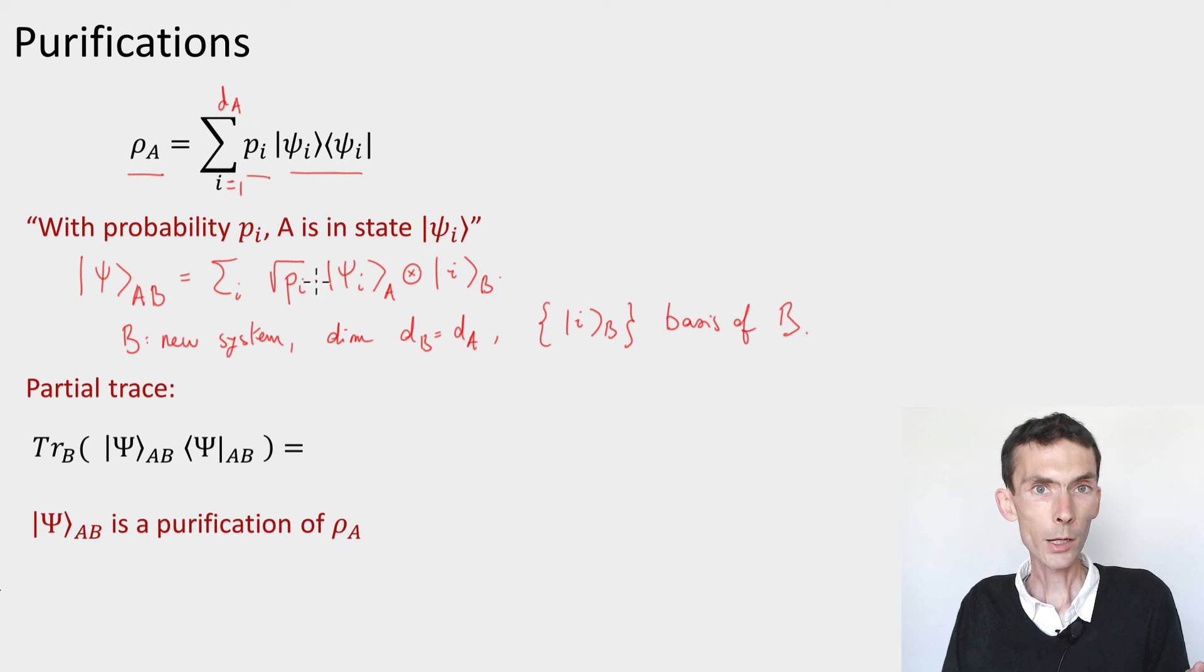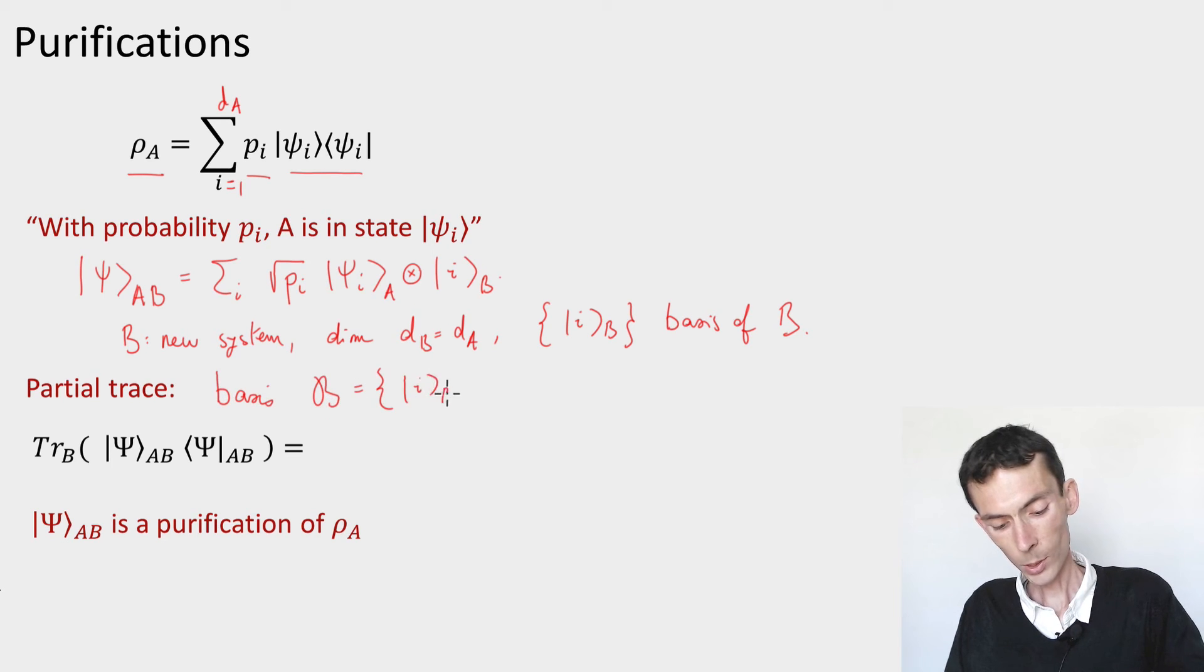And now let's check that it achieves what I claim it does. So we have to compute the reduced density of psi AB on A. How do we do that? We choose the basis for the B system, we measure, we see what happens. So of course, what basis are we going to choose? The one we just introduced. So let's use that basis for B.